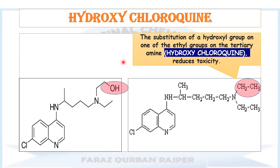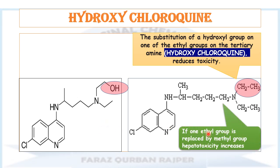Hydroxychloroquine is comparatively less toxic than chloroquine. Apart from this, all other structural features are similar to chloroquine — it has chlorine at the 7th position and the same butyl side chain between the two amino groups. If we replace the ethyl group with a methyl group instead of a hydroxyl group, a new derivative would be synthesized, but that derivative is highly toxic and causes more hepatotoxicity, so its synthesis has been banned.